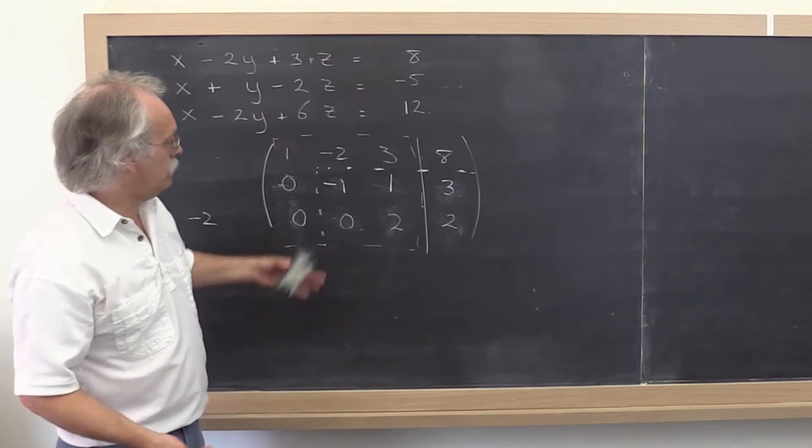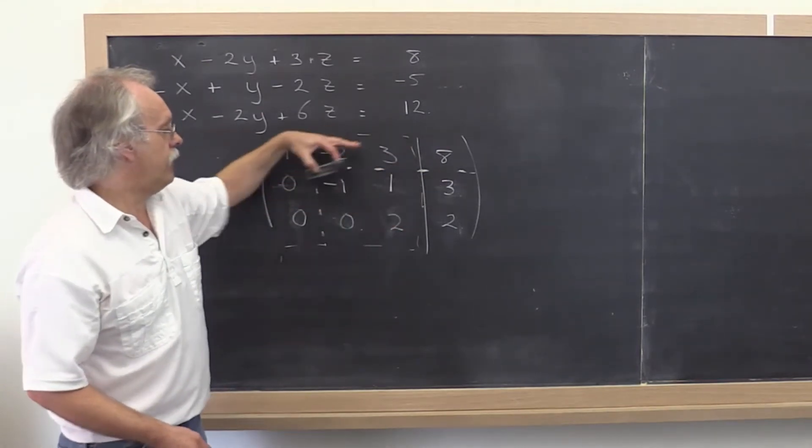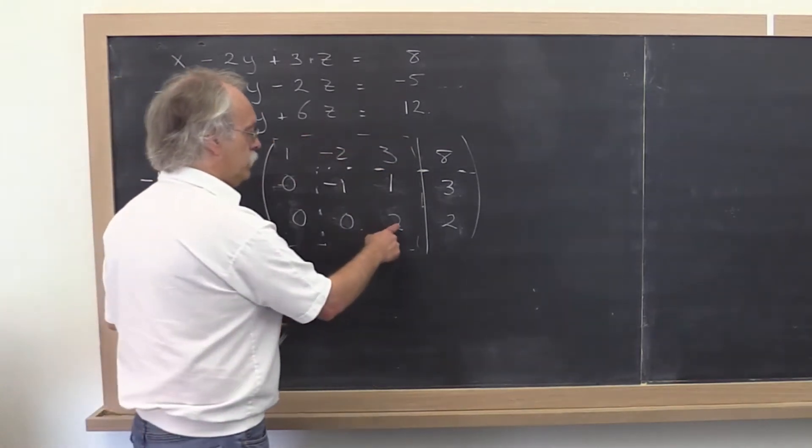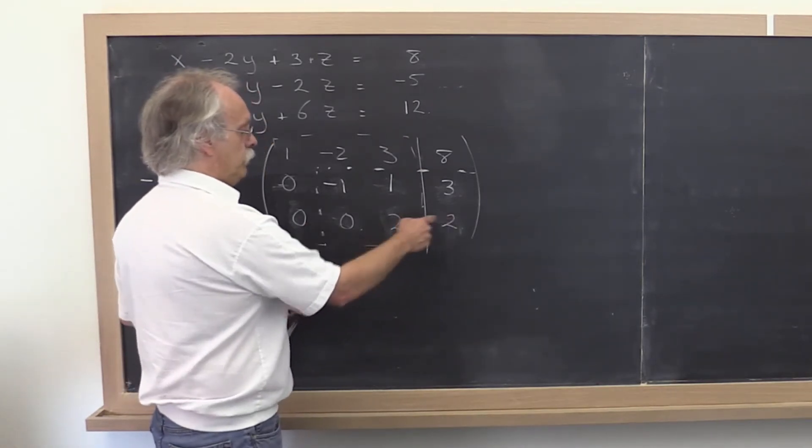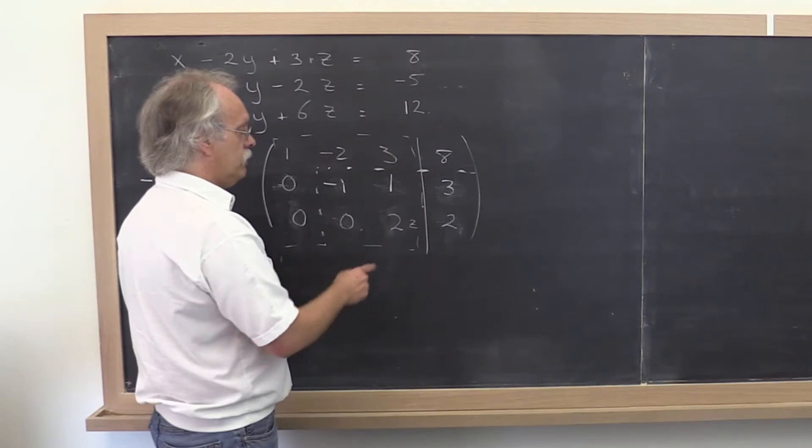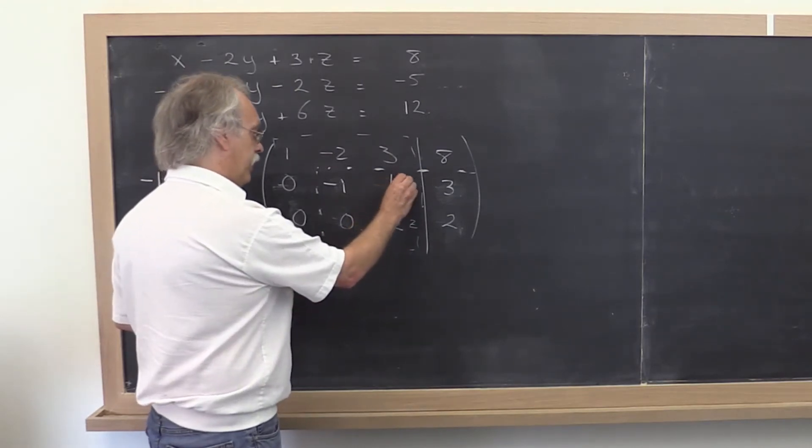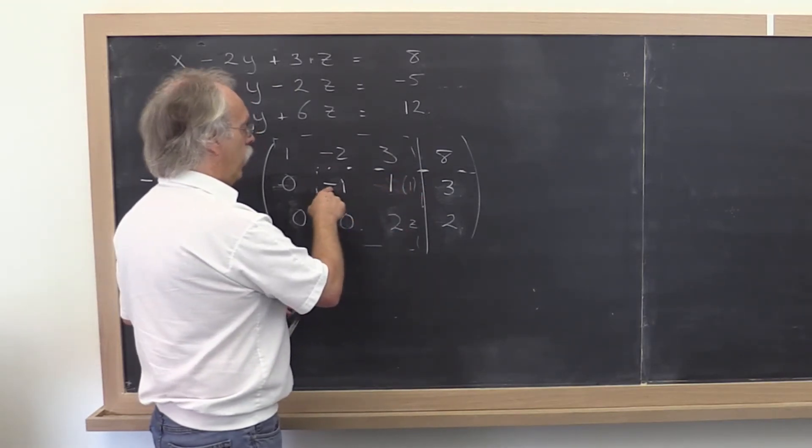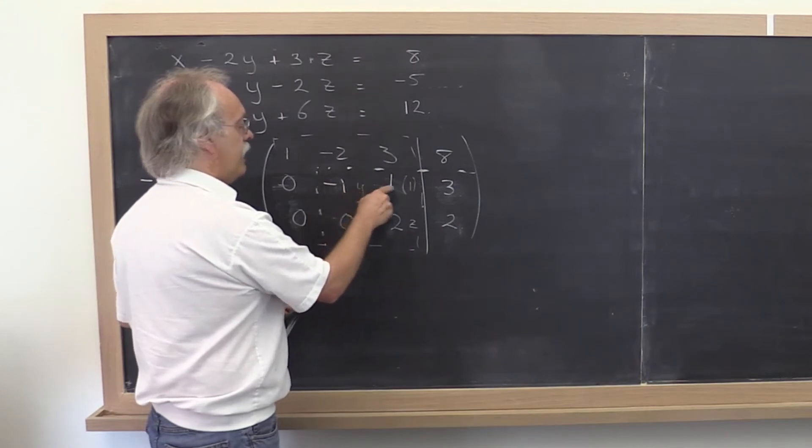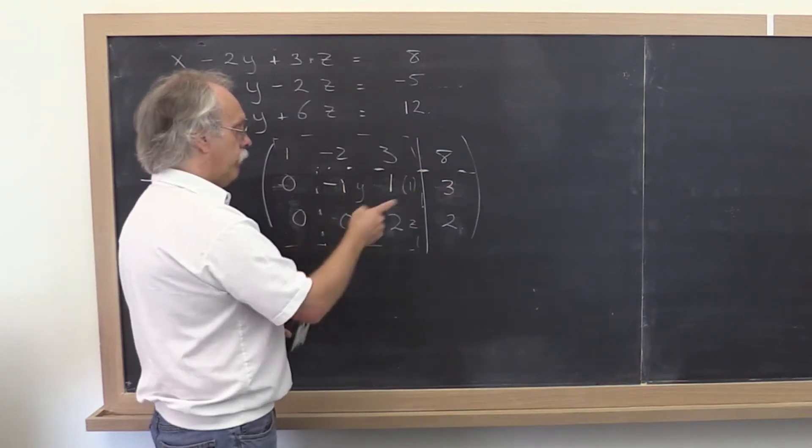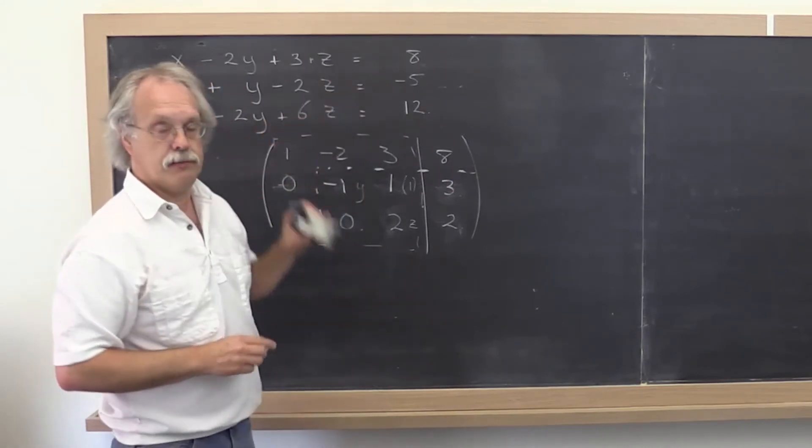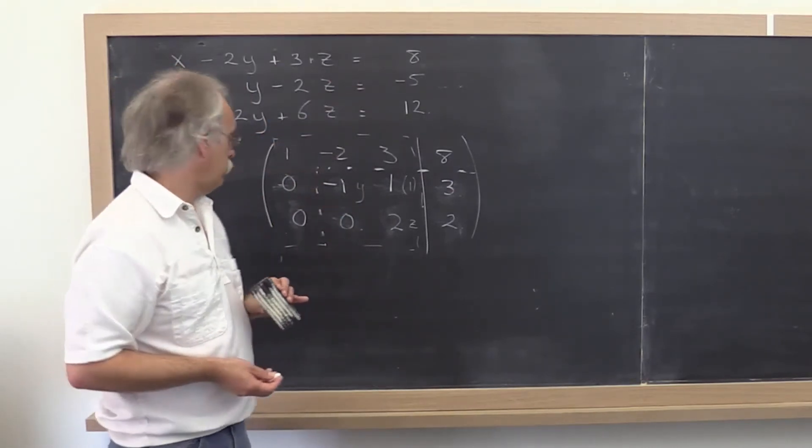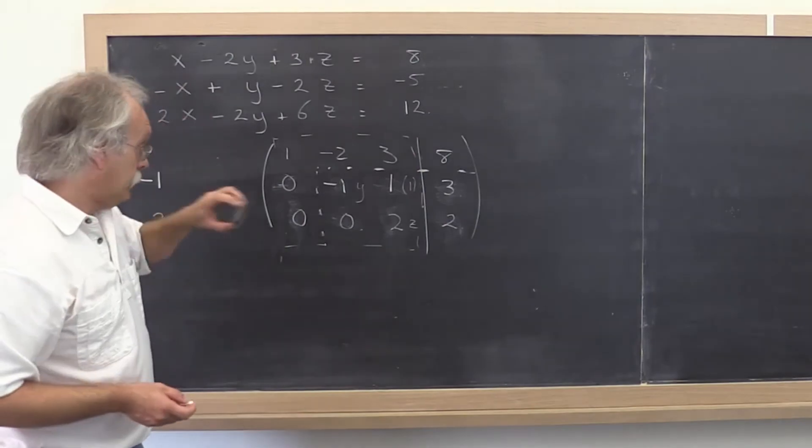And then you notice that this is an upper triangular system and you can say, oh, this really represents 2 times z. So z is really 2 divided by 2 and therefore 1. And then you can take that and plug it in here and say, oh, minus 1 times y plus 1 must be equal to 3. And you can compute y out of that, etc. All right?